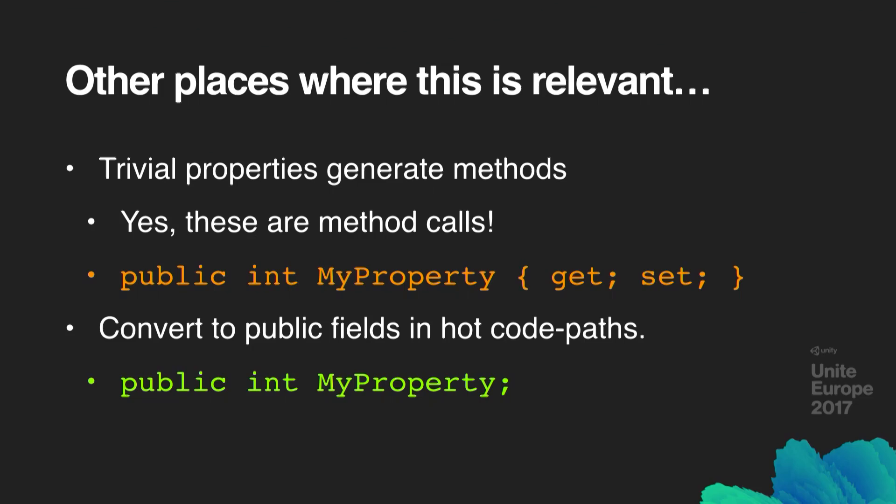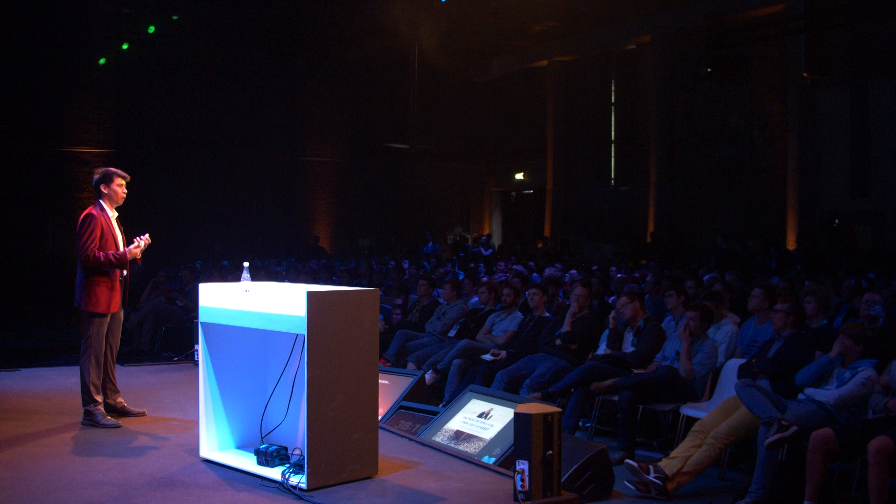Method call overhead is also relevant for trivial properties. The C#-ish way of declaring a variable on a class is often to create a property with just a public getter and setter. However, every time you get or set the value of this variable, you are actually invoking a method under Unity's C# compiler. So if there are variables used in the hot paths in your code, consider converting them to public fields. There's no functional or protection difference, but it is actually more performant.